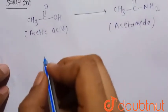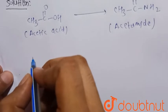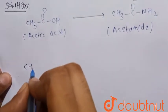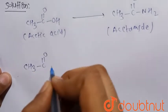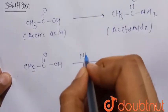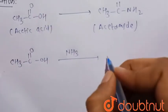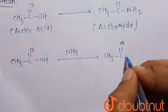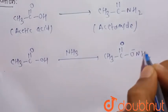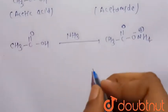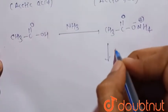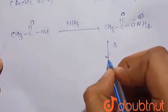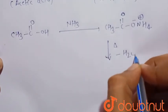Now consider the conversion, or the preparation, of acetamide from acetic acid. When acetic acid is treated with ammonia, there is a formation of CH₃C(=O)O⁻ NH₄⁺. In the next step it is heated, so there is the removal of one water molecule, that is H₂O.